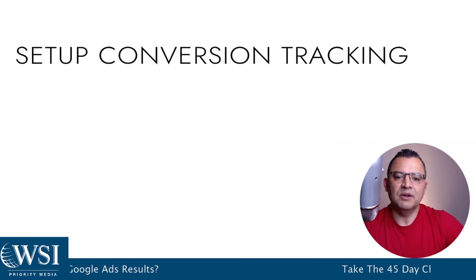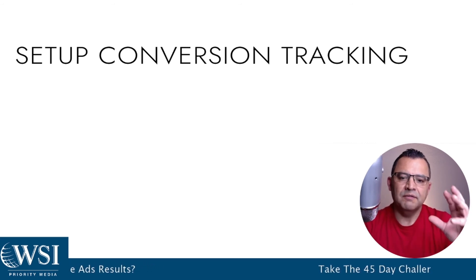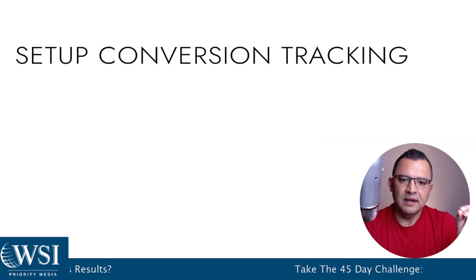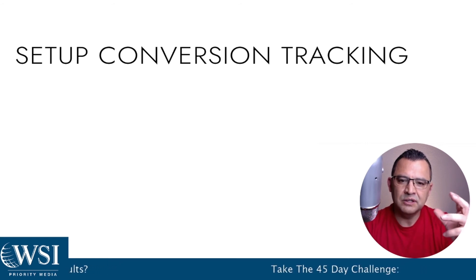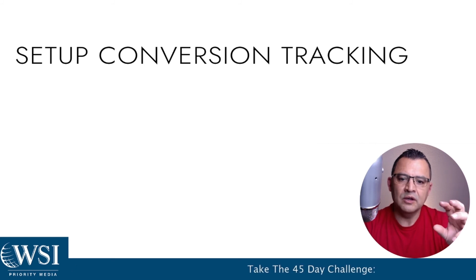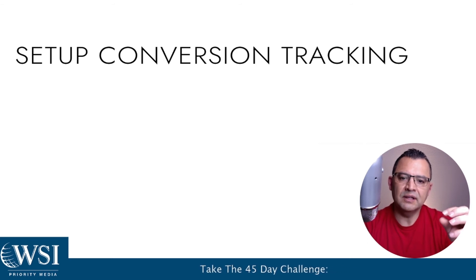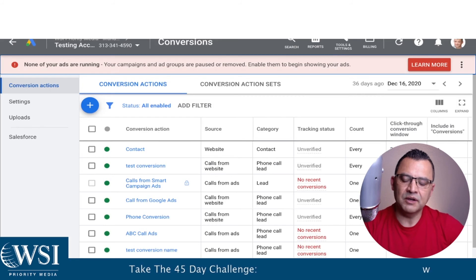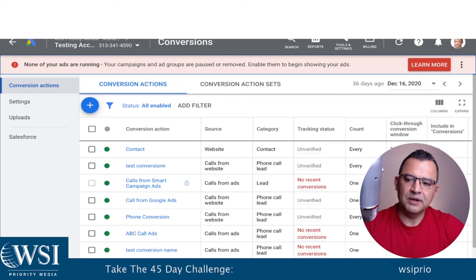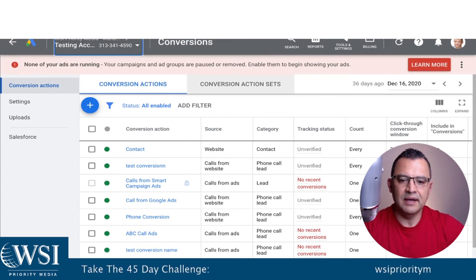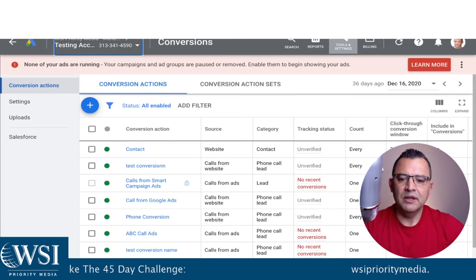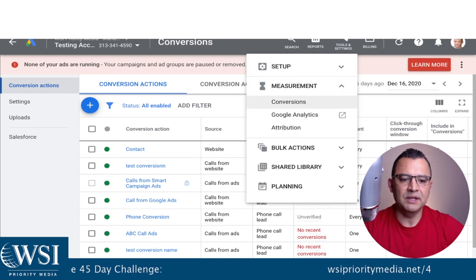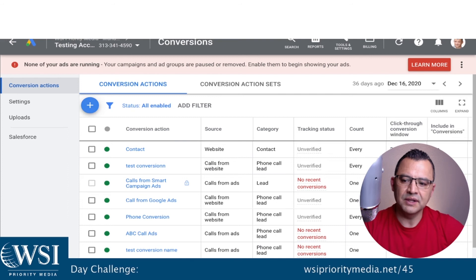The next part is setting up your conversion tracking — so important. If Google doesn't have the data and you're trying to use machine learning and want Google to optimize for conversions, you have to let it know very clearly what your conversion is. Not all conversions are the same. To set up conversion tracking, go into Tools and Measurement, click on Conversions, hit the plus button, and then choose your objective. This is just a testing account I use for examples. Select what kind of conversions you want to track — say you're sending them to the website.